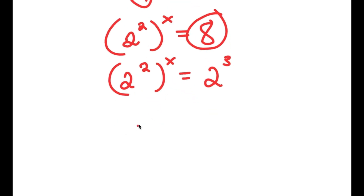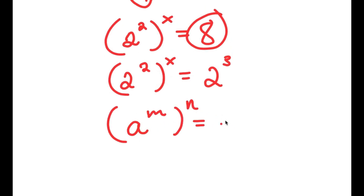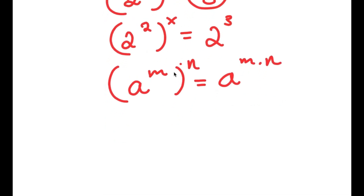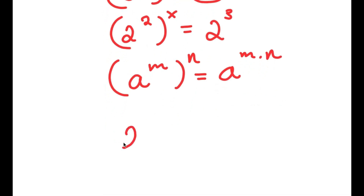If I have something in the form a to the power of m to the power of n, this is equal to a to the power of m times n. So 2 squared to the power of x becomes 2 to the power of 2 times x, which is simply 2 to the power of 2x. And this is equal to 2 to the power of 3.